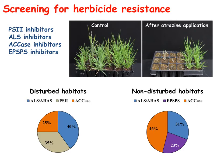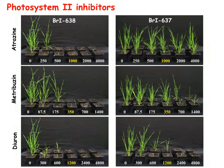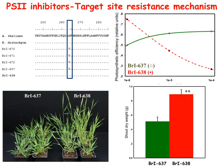In response to photosystem II inhibitors, the resistant accession BRI-637 showed high survival up to four times the recommended rate of triazine and triazinone inhibitors. However, this accession did not survive the application of the phenylurea inhibitor diuron. This resistance was associated with a serine to glycine amino acid substitution at position 264 of the PSBA gene.